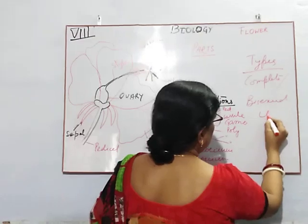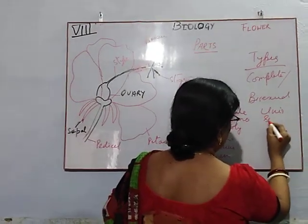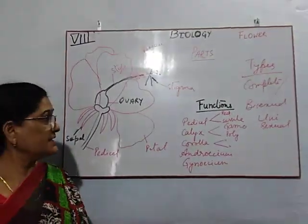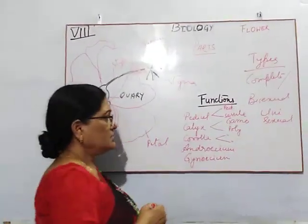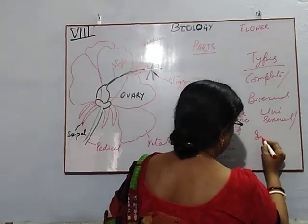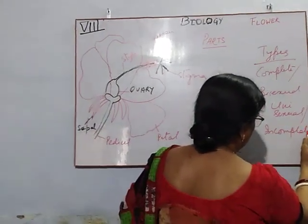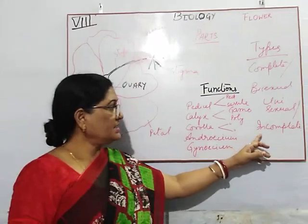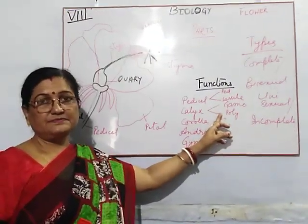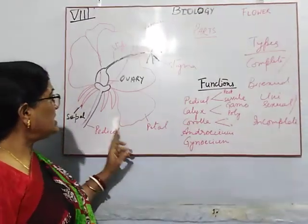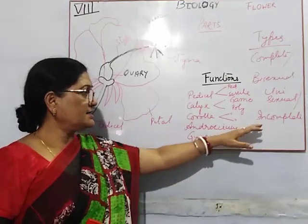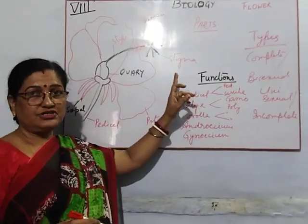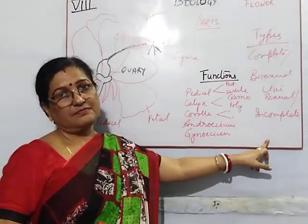Another type is unisexual. Unisexual means those who have any one type of sex, either male or female. That is why they have another name: incomplete flower. Incomplete flowers are of two types. If they have only the male part — the stamens but not the ovary, style, or stigma — they are termed staminate flowers. And if they have only the female part with no androecium, then they are known as pistillate flowers.